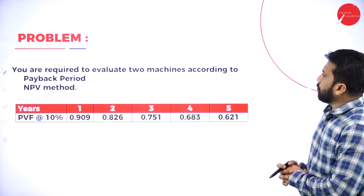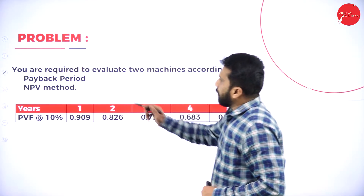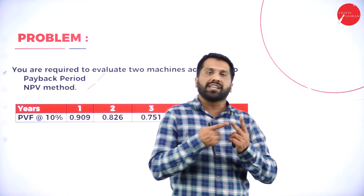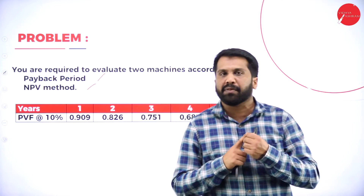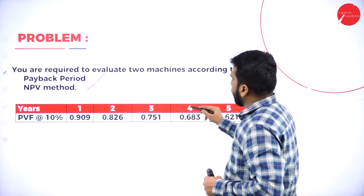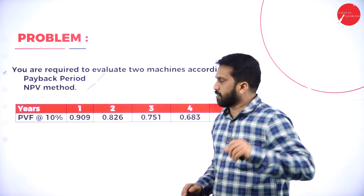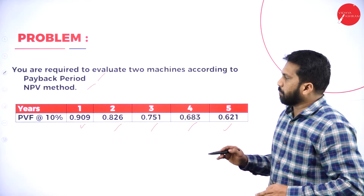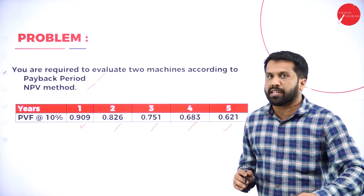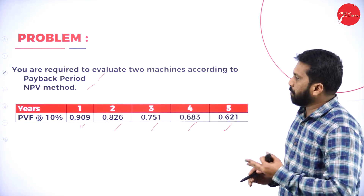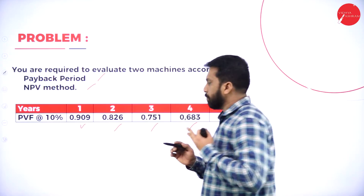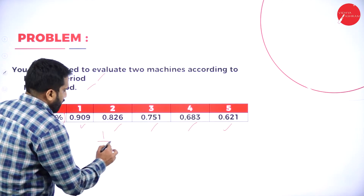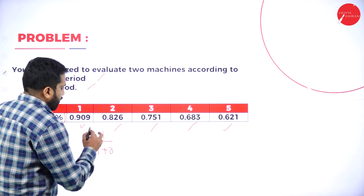You are required to evaluate the two machines according to payback period and NPV. We need to find out only two things: payback period and NPV. We have 5 years with PV factors given. Sometimes in the question paper they will not give you PV factors — in that case, use the formula: 1 divided by (1 plus R) to the power n. If the rate is 10%, we can calculate: 1 divided by 1.10 = 0.909 for year 1, 0.826 for year 2, 0.751 for year 3, and so on.